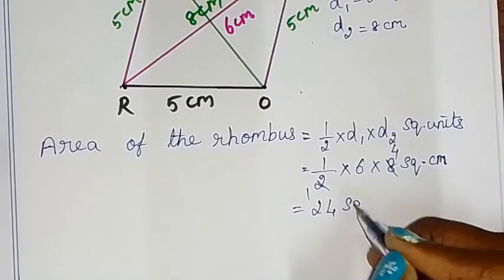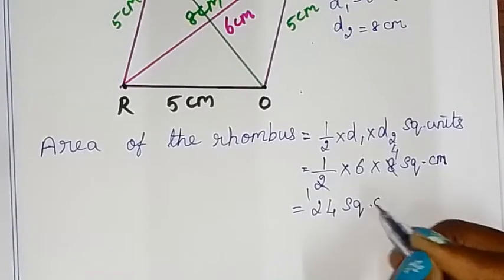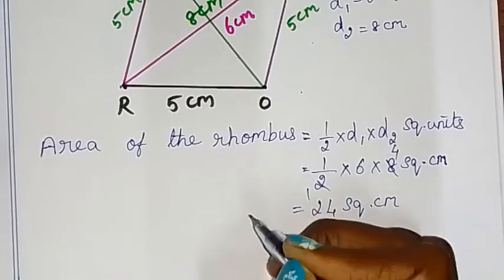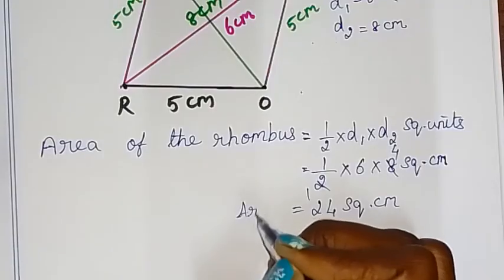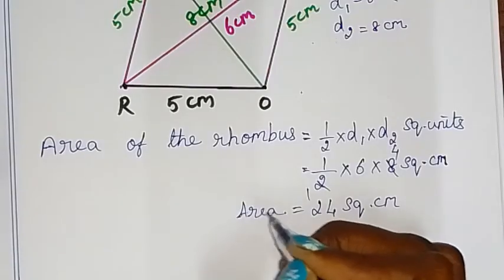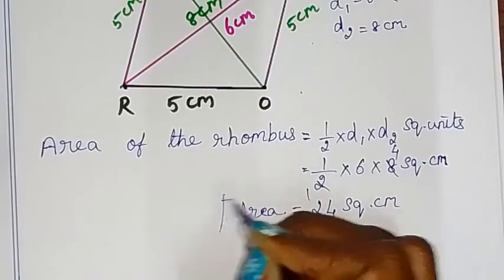This is the required area of the given rhombus. This completes Example 5.34.